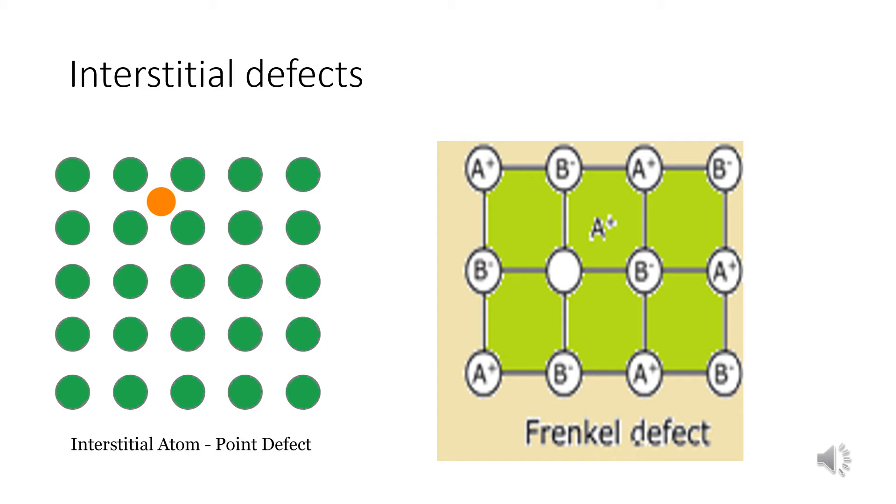In the case of vacancy defect, the density of the substance or density of the crystal will be decreases. But in the case of interstitial defect, the density will be increases.